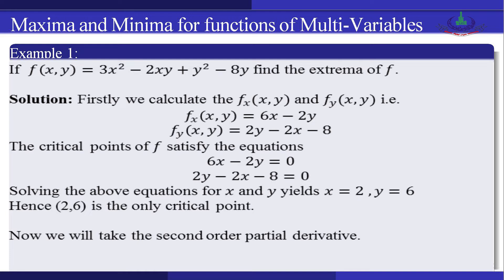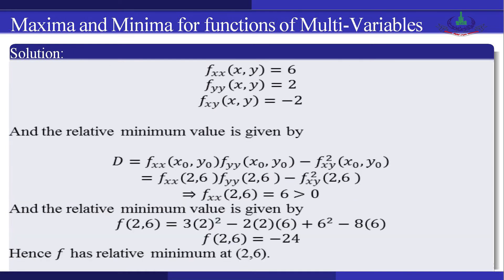Now we calculate the critical points. The critical points satisfy f_x = 0, giving 6x − 2y = 0, and f_y = 0, giving 2y − 2x − 8 = 0. Solving these two equations for x and y, we get x = 2 and y = 6. Therefore (2, 6) is our critical point.